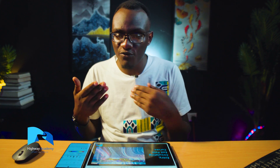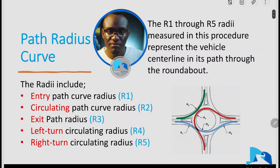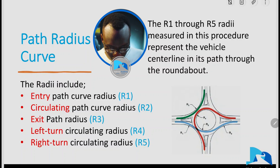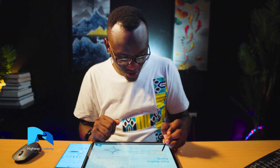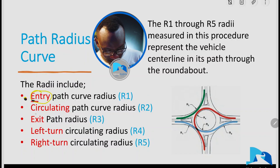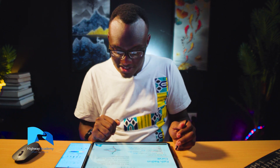These form R1, R2, R3, R4, R5. So what are these path curve radii? R1 is the entry. R2 is the circulating. R3 is the exit. R4 is the left turn. R5 is the right turn.